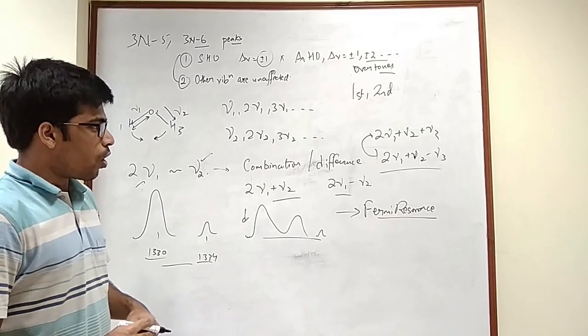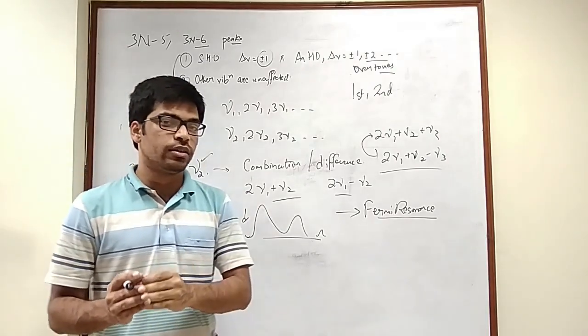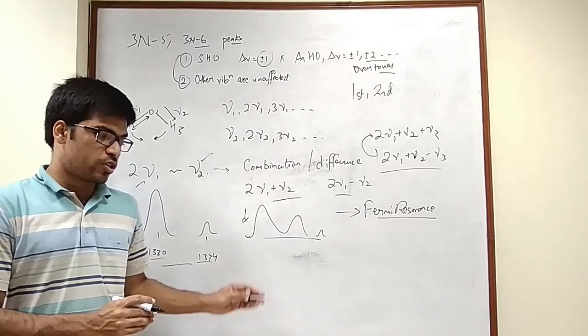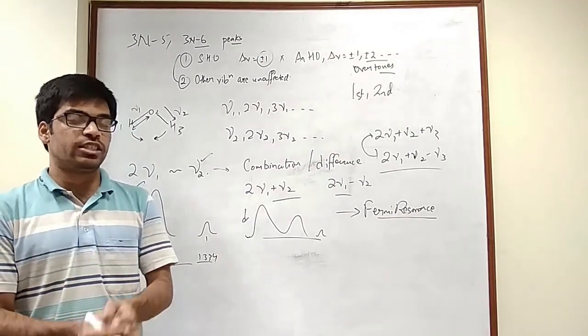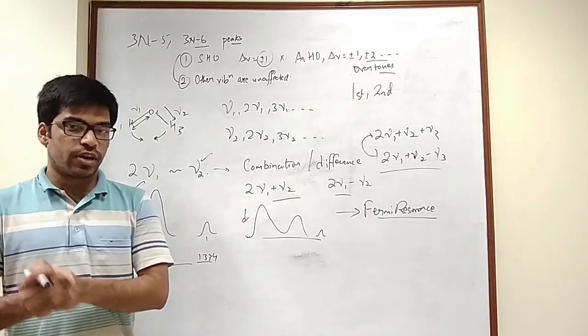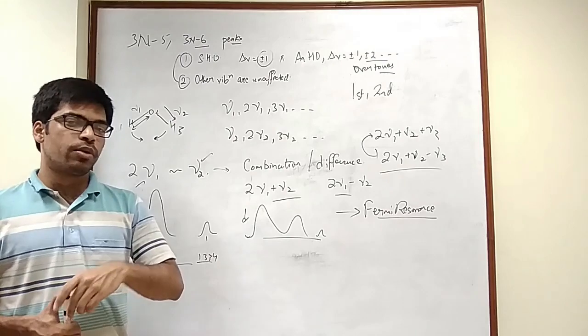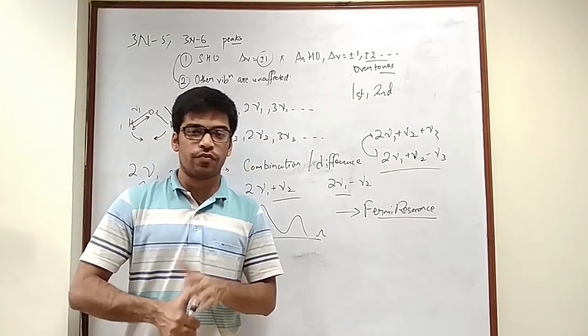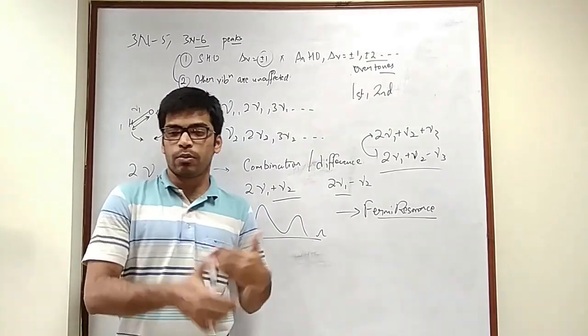I think that's all the bit that is there to discuss about combination and difference bands and Fermi resonance. Not a single question has come from this part of vibrational spectroscopy, but yes it can come. It's a very crucial part of experimental vibrational spectra. With this, we come to the end of our discussion about pure vibrational spectra. In the next lecture, I'll be starting with the discussion of combination spectra for vibrational spectroscopy, that is vibrational rotational spectra of diatomic molecules, and then we'll move on to the polyatomic molecules.